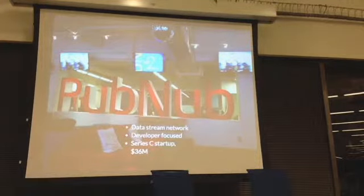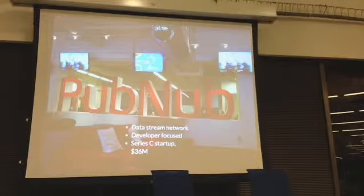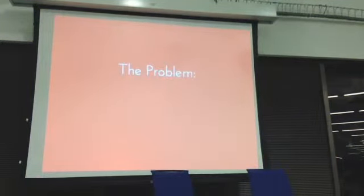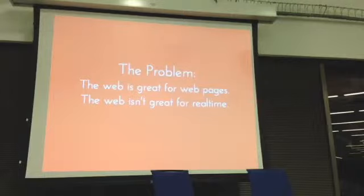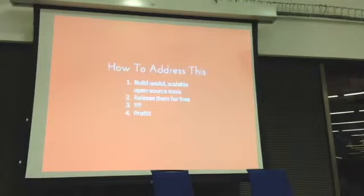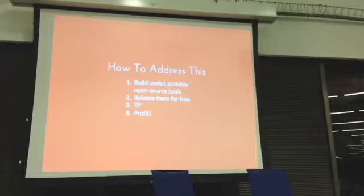I work at this company, Pubnub. We're a data stream network, so we're sort of like a hosted socket IO implementation — super developer-focused product. We just raised our Series C pretty recently, so we're going to have to move out of this office, which is too bad because we just installed these awesome letters in there. The problem that I'm trying to solve, and that our company is trying to solve, is that the web is great for web pages, but it's not great for real-time. There are some technologies that cover over that — WebRTC, WebSockets, and a lot of people are excited about HTTP2 — but it's still sort of this intractable problem. The way we're addressing this is actually pretty sweet: we're building a lot of useful, scalable, open-source tools that everybody can use for free, releasing them on GitHub, and then I'm not sure how that turns into money, but I'm going to let the business people worry about that.